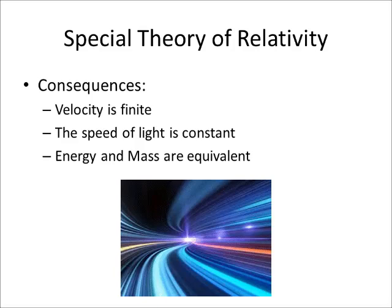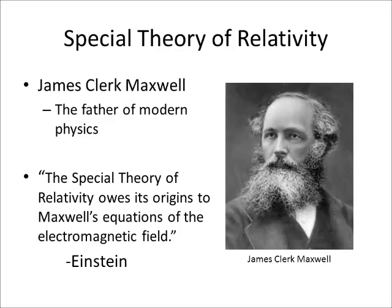And finally, the last consequence to be discussed is the one that includes E equals mc squared. This equation shows that energy and mass are equivalent and transmutable. Of course, Einstein did not take full credit for his discoveries. Even a genius needs his inspirations, and he just happened to be inspired by the father of modern physics, James Clerk Maxwell. Einstein showed his appreciation of Maxwell when he stated, on the 100th anniversary of Maxwell's birth, that the special theory of relativity owes its origins to Maxwell's equations of the electromagnetic field. Einstein was not completely satisfied by ending his discoveries with this theory, so he continued his experiments and research until he came up with a new theory years later.